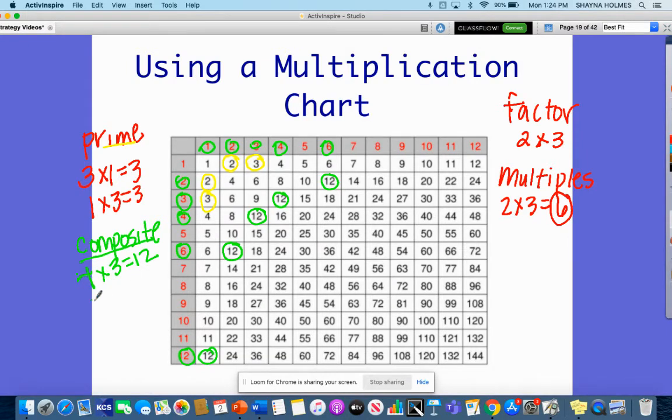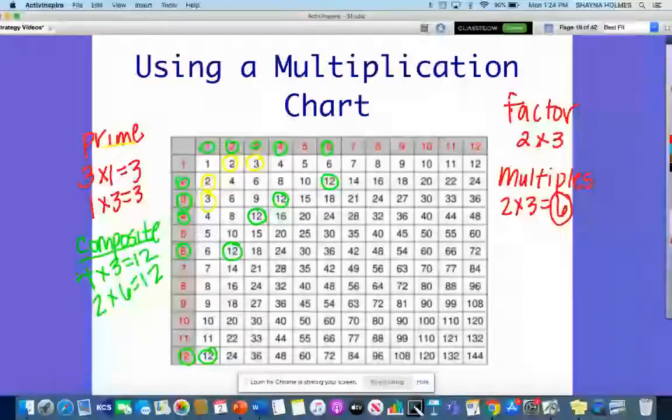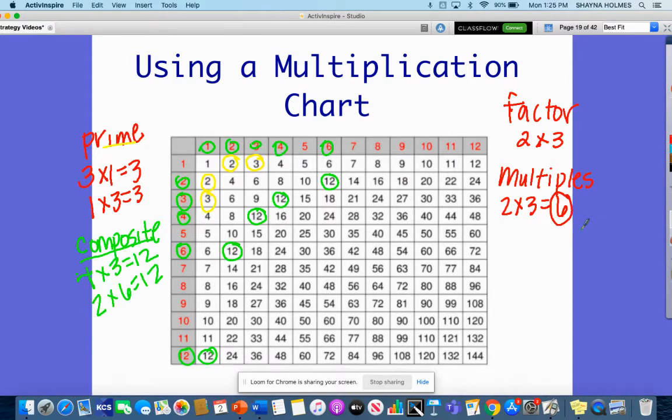Or I can multiply two times six and get 12. So it has factors that are, it obviously will always have one and itself, but it also has other numbers as factors that makes it composite. These are the vocabulary that you will need to know for this lesson.